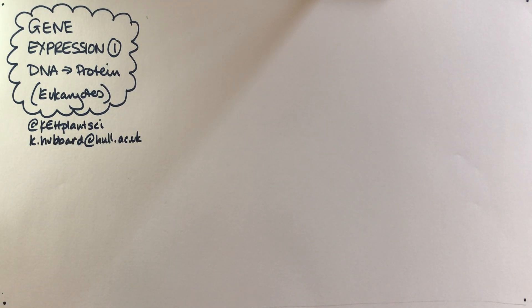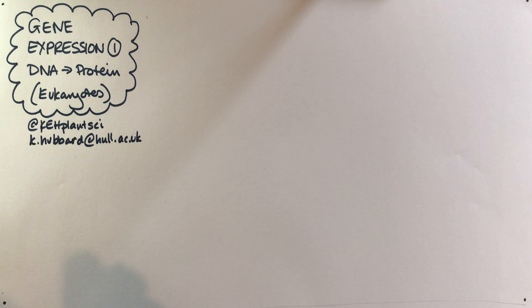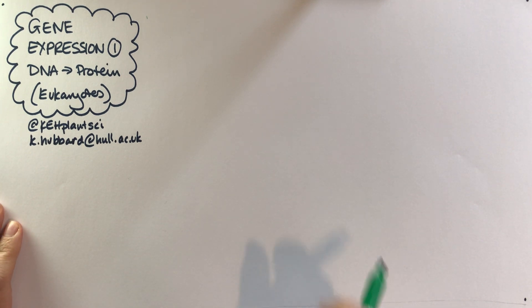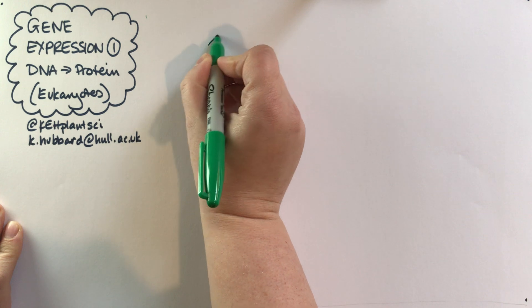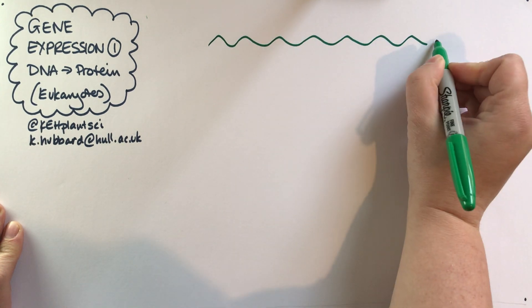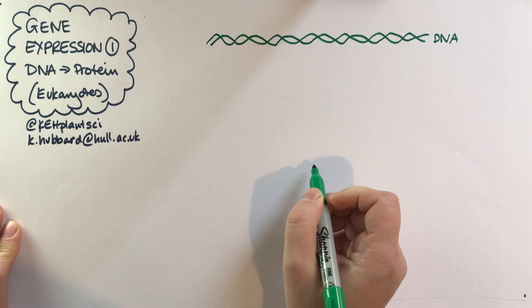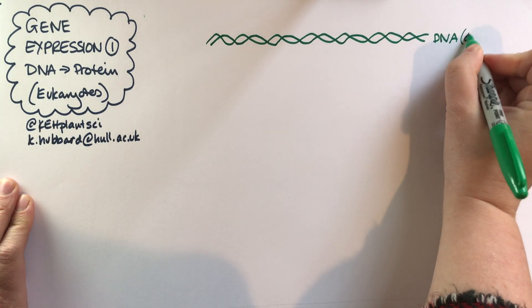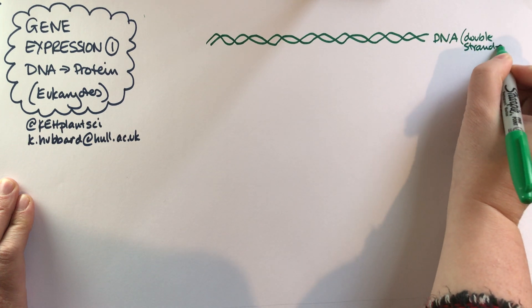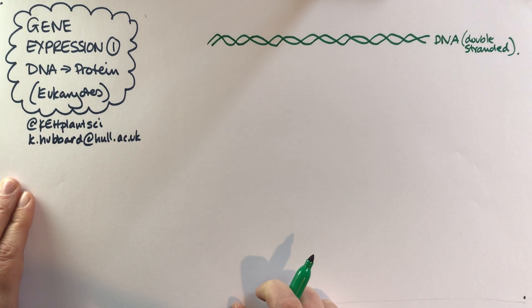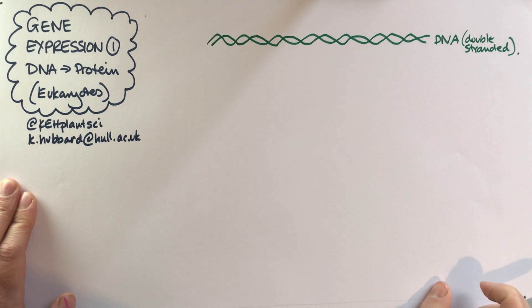In this video we're going to think about the process of gene expression — going from DNA to a functional protein inside the cell — and we're going to be thinking about this in eukaryotes. The process is broadly similar in prokaryotes but there are some key differences. DNA is in the form of the double helix, a double-stranded molecule, and the sequence is just endless bases of A, T, C, G going on effectively forever.